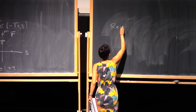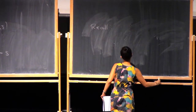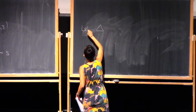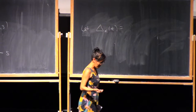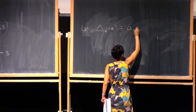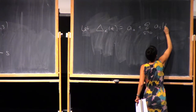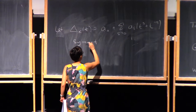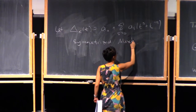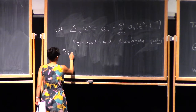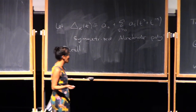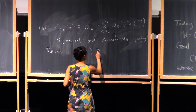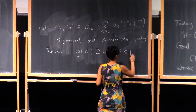Recall, writing the Alexander polynomial in symmetrized form as a sum of A_s times T^s, the Alexander polynomial gives a lower bound on the genus of K: the genus of K is greater than or equal to the maximum S such that A_s is nonzero. Knot Floer homology improves this: it detects the genus exactly, in the sense that the genus of K equals the maximum Alexander grading S such that HFK hat in that grading is nonzero.